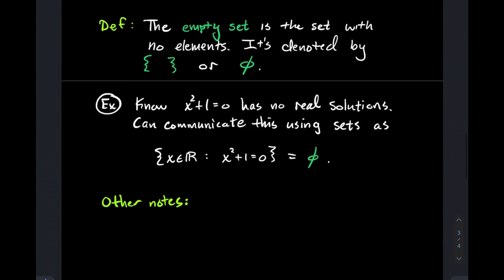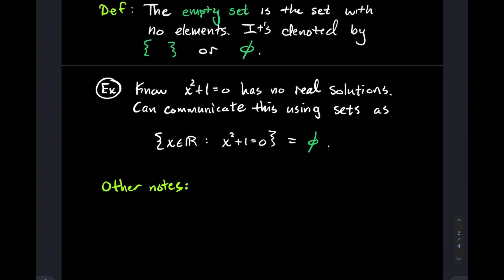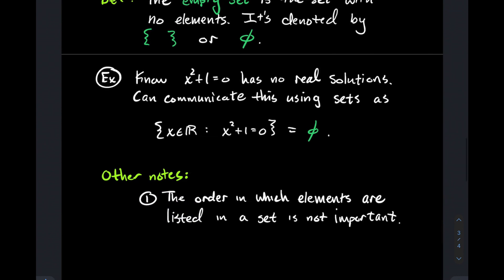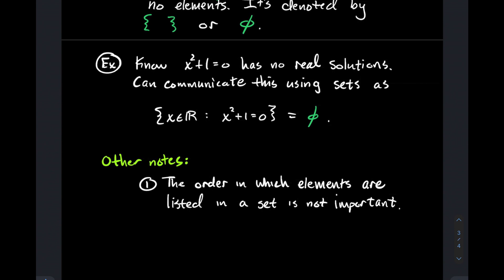Here are some other notes about what does it take to be a set, or what are some common rules when we're describing elements in a set. There's two big ones. The order in which elements are listed in a set is not important. All that really matters is what are the objects in the set. To give you an example: the set with three letters A, B, C, if I wrote them as B, C, A instead, it's the same set. I do not care what order you list them in.